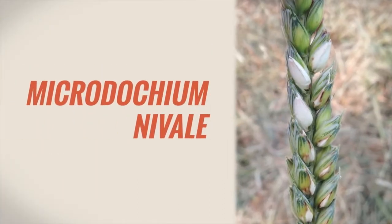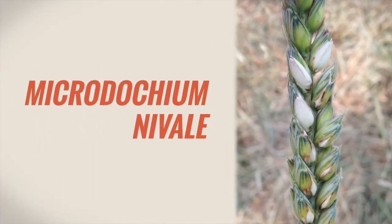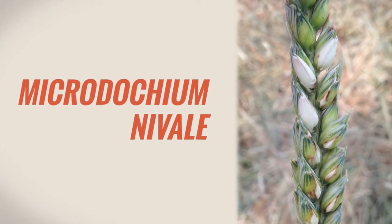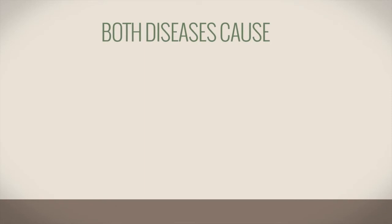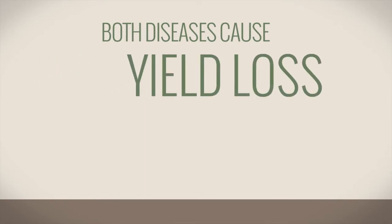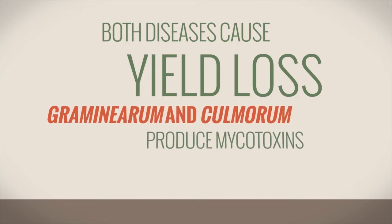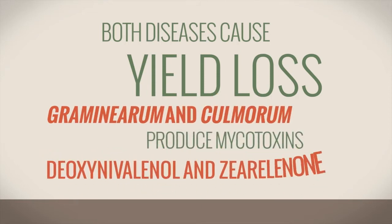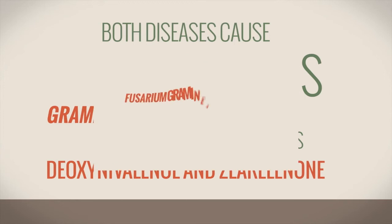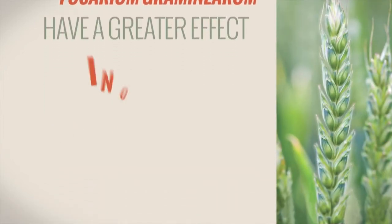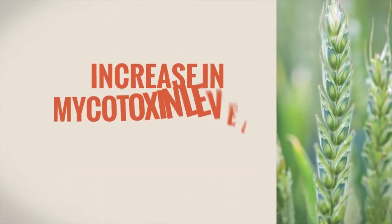Whereas Microdocium nivale will affect individual spikelets, affecting germination of the seed itself. Importantly, while infection from both diseases can result in similar yield losses, only the Fusarium species Graminearum and Culmorum produce the harmful mycotoxins DON and ZON, with Fusarium Graminearum having greater effect on grain quality and an increase in mycotoxin levels.